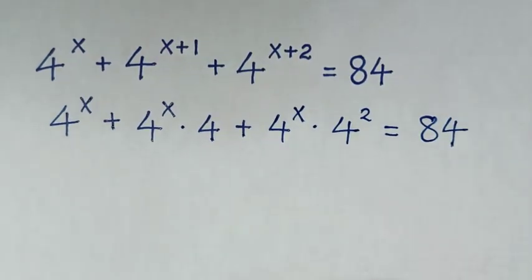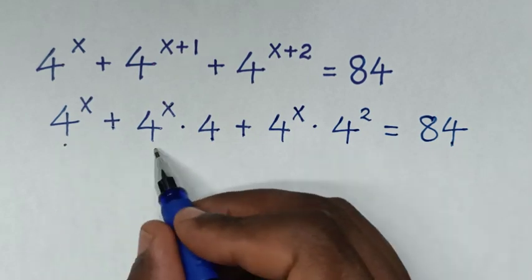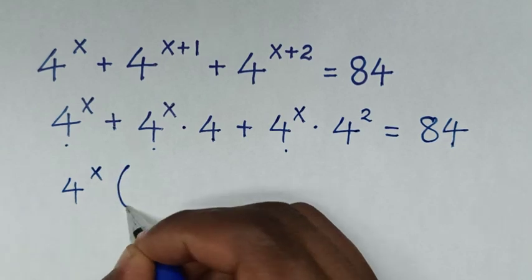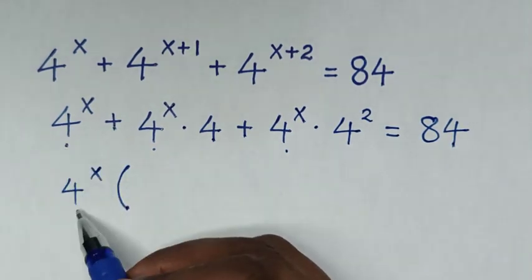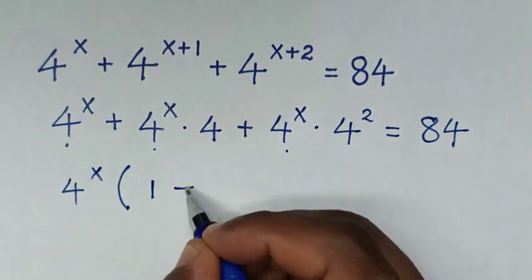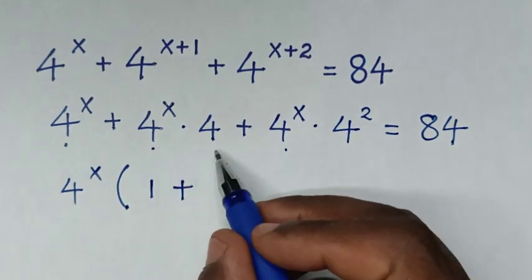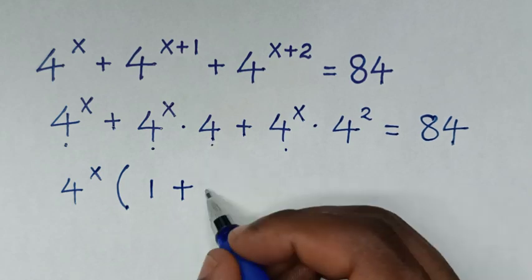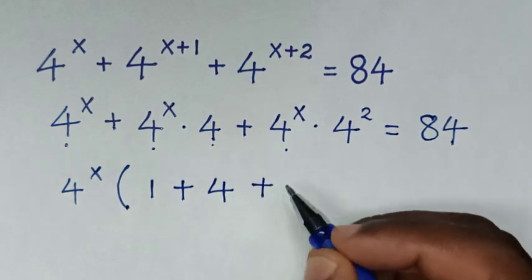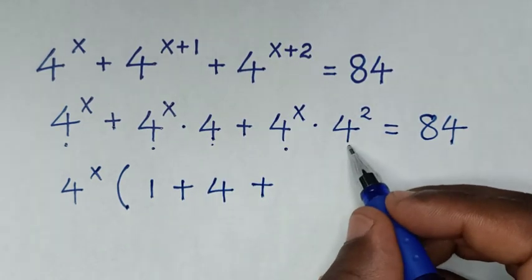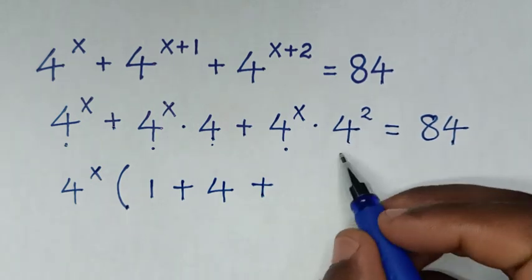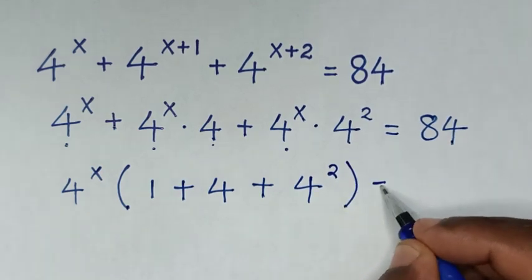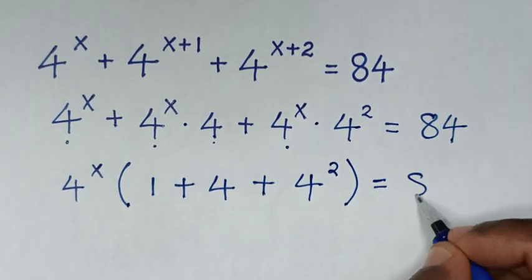Then in the next step, 4 power x is common, so we take 4 power x out of the bracket. Then 4 power x divided by 4 power x is 1, plus 4, plus 4 power 2. The bracket is equal to 84.